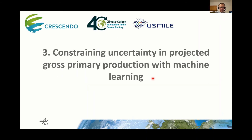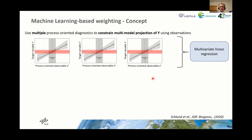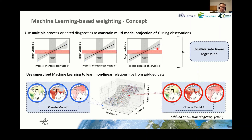In the last part of this talk, I will briefly introduce an alternative method to constrain uncertainties in climate model projections using machine learning. The basis of this approach is a technique called multiple diagnostic ensemble regression, which is mathematically similar to emergent constraints and uses different process-based observables correlated with a target variable. Using observations of these variables and a multivariate linear regression, we obtain a constrained projection of the target variable. We extended this method with a supervised machine learning approach — a non-linear regression method that also considers gridded data.